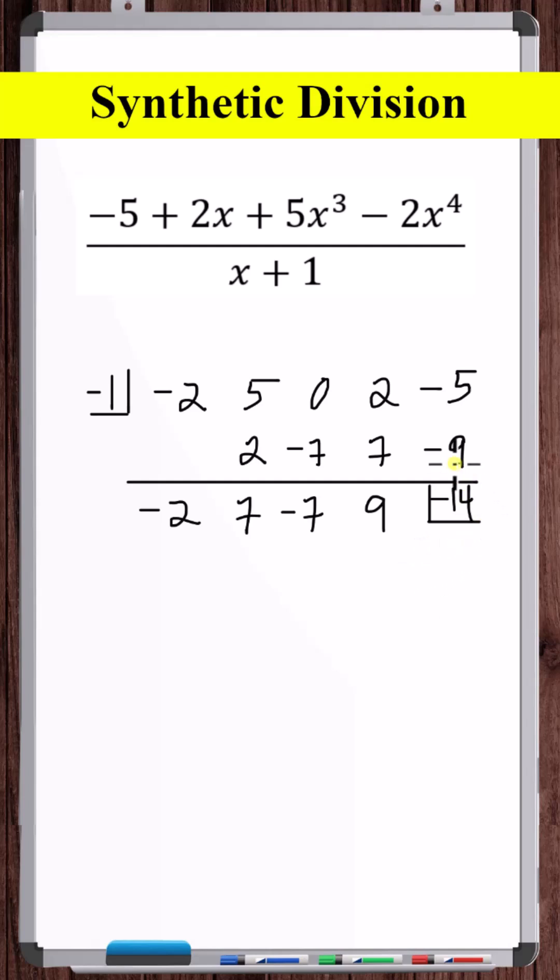Okay, for synthetic division, the remainder is always a constant, and the order of the quotient is going to be one less than the order of the dividend.